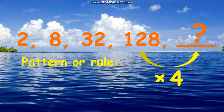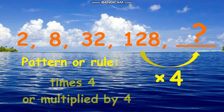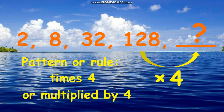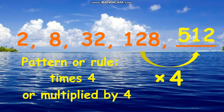This means that to find the missing number, simply multiply 128 by 4. 128 times 4 equals 512. Therefore, the missing number is 512.